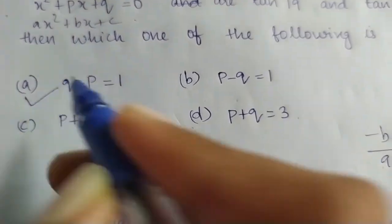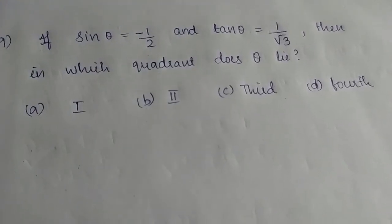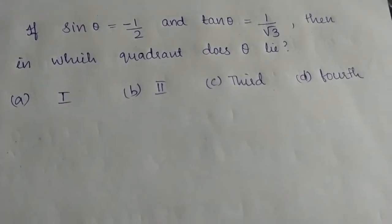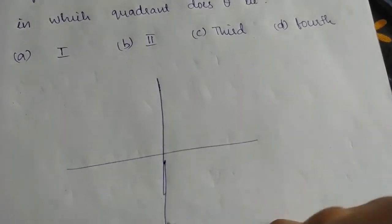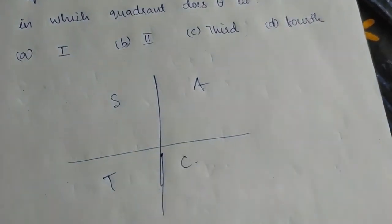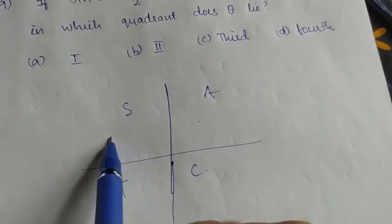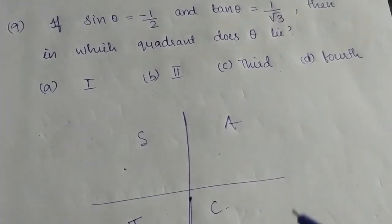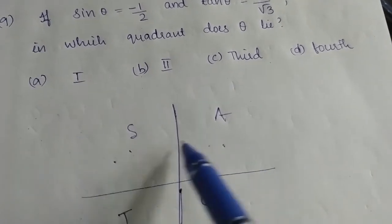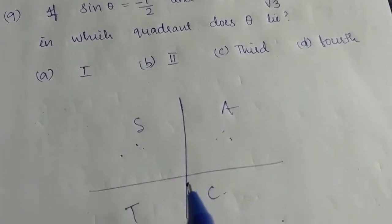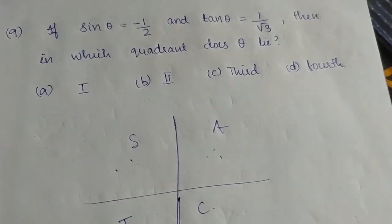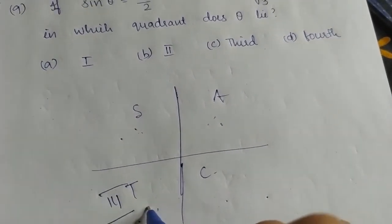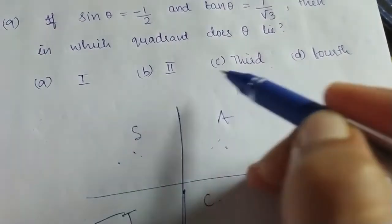Next question: sin theta equals minus 1/2 and tan theta equals 1 over root 2. We use the quadrant system. Since sin is negative and tan is positive, we check the quadrants. The third quadrant is where both sin is negative and tan is positive. So Option C, the third quadrant, is correct.